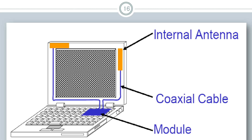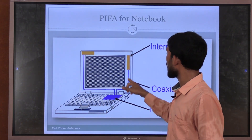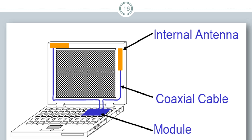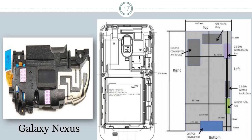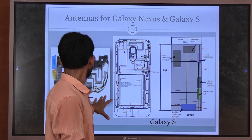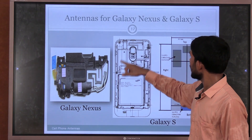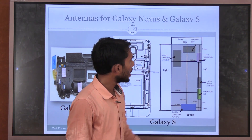Here you can see how an antenna is fitted in a notebook. There is a module, a coaxial cable power line, and the internal antenna inside the PC or notebook. This is how we can feed the PIFA antenna — a simple structure showing how the antenna is fitted inside a Galaxy Nexus or various types of phones. You can also see a 2.6 GHz MIMO antenna with different resonant frequency-based antenna structures inside the Galaxy.